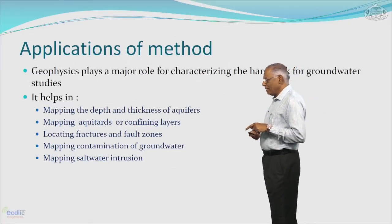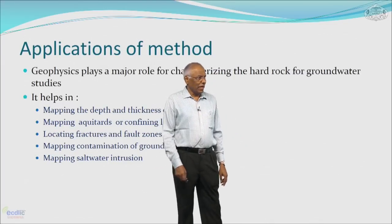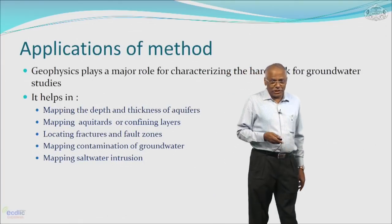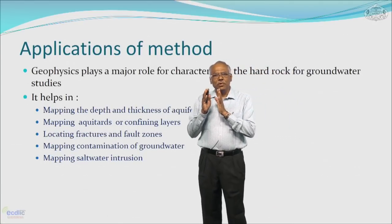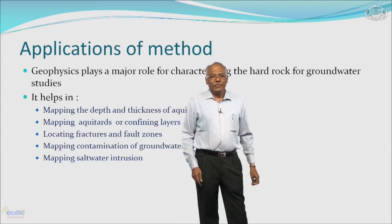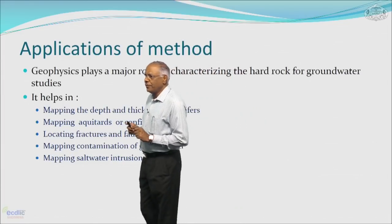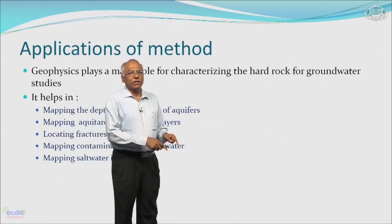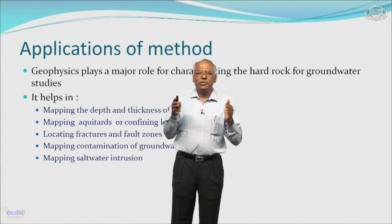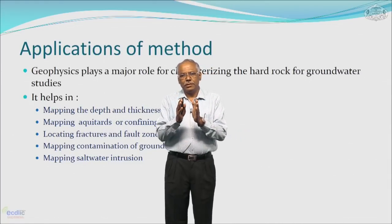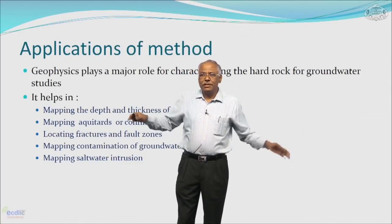Ground water is essentially present in rocks or soils only because of certain features, so locating these features is very important. Such features are fractures and fault zones — these conduits need to be located, which we can do with the help of geophysical techniques. Mapping of ground water contamination is also possible. These days, a lot of toxic waste is injected into the subsurface, causing pollution of subsurface ground waters. We need to identify what really is the plume of contamination, which can be very easily mapped with geophysical techniques.